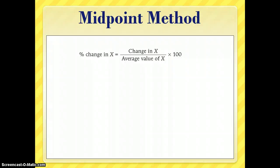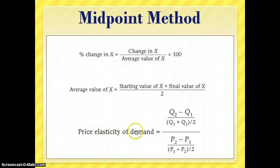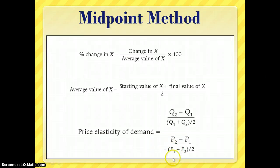To do the midpoint method, we have to figure out the percent change in price and percent change in quantity. To find percent change, you take new minus old, divided by the average, then multiply by 100 — where the average is the starting value plus the final value divided by 2. So our price elasticity of demand through the midpoint method is: new quantity minus old quantity, divided by the average quantity (Q1 plus Q2 divided by 2), and we do the same thing for price: new price minus old price divided by the average price.